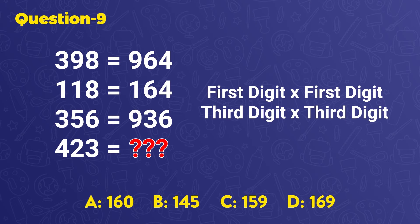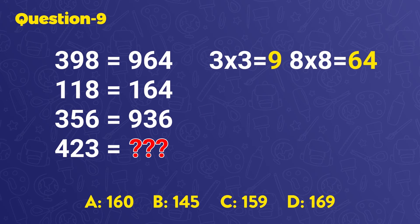When you combine the numbers, you will have these values. Let's check out together. 398 equals 964, 3 times 3, and 8 times 8. 118 equals 164, 1 times 1, and 8 times 8.